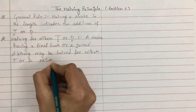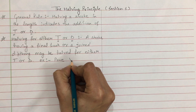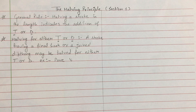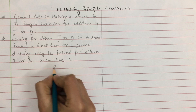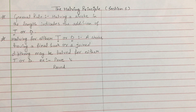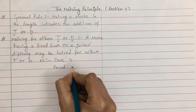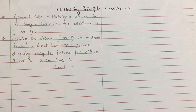अगर आपको word लिखना है 'paved', यहाँ पर D की addition भी करनी है तो P को half करते हुए लिखेंगे — P and V। इसमें D की addition हो गई है, आपने half किया है P को, then D की addition हो चुकी है।